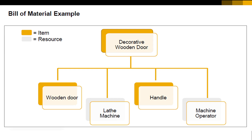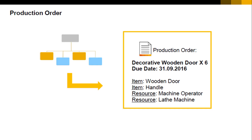Note that finished products are also defined as item master data in the system. A production order is a command to produce a production item. A Bill of Materials is copied into the production order document, either manually or in an automatic process. Then the needed quantity of the finished good is entered, along with the required due date of production and other relevant data.